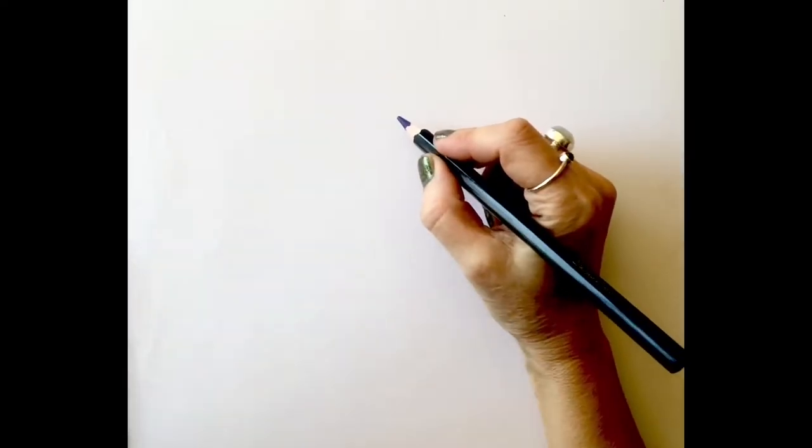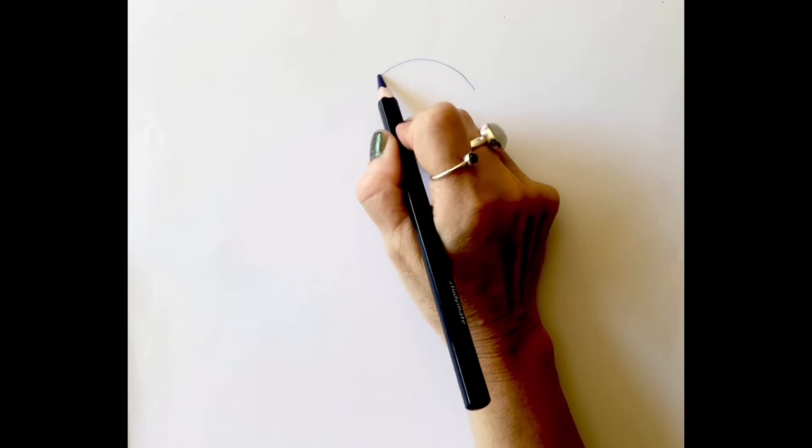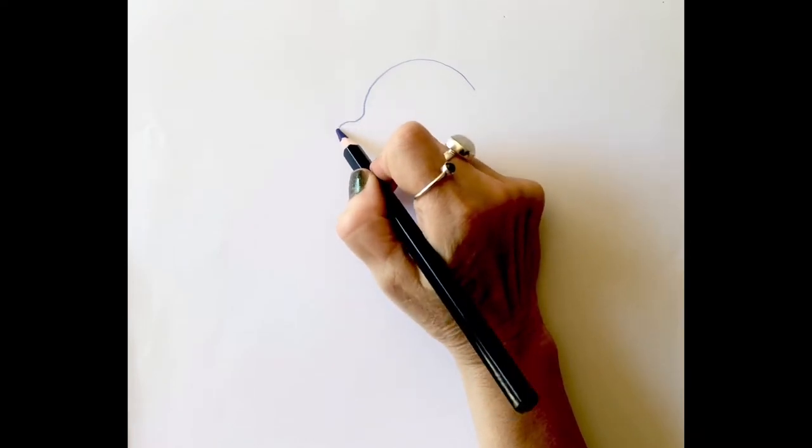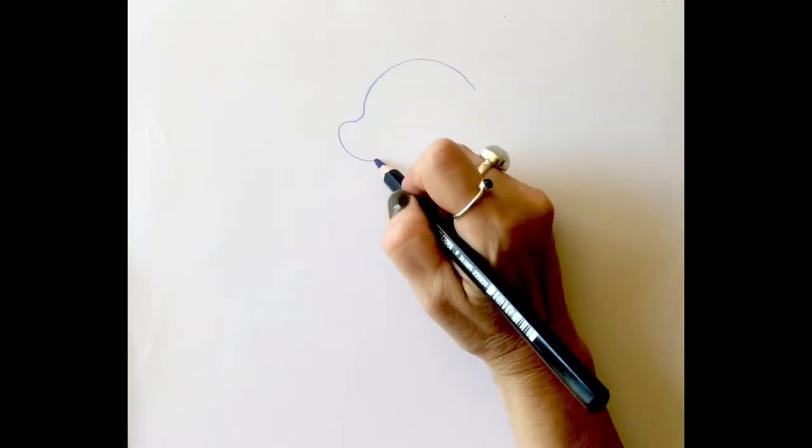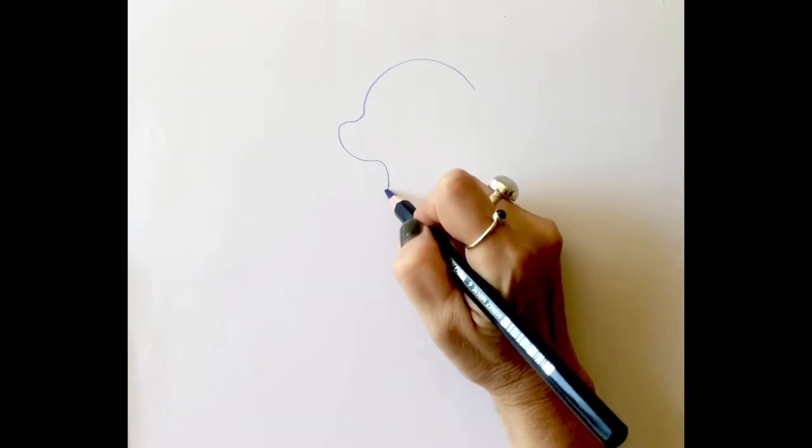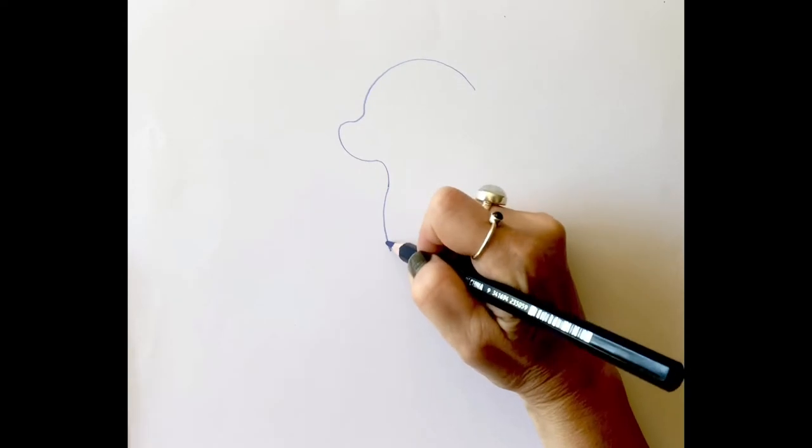Let's draw the seal jumping out of the water. I'm using colored pencil today and I'm just doing an outline of the seal's head and nose. Now I'm going to do the outline of his body.